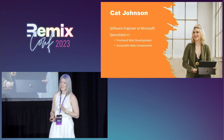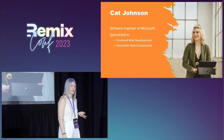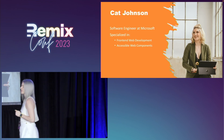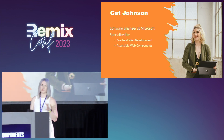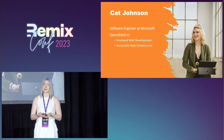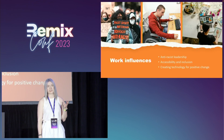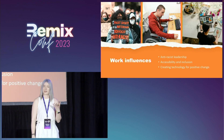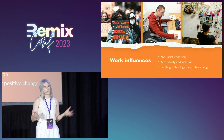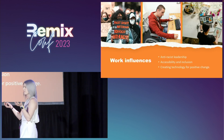My name is Kat Johnson. I'm a software engineer at Microsoft, and I specialize in front-end web development. I am specifically very passionate about creating accessible React components. With all of my work and my day-to-day, I love building websites and experiences that tie into areas I'm really passionate about — anti-racist leadership, creating accessible and inclusive experiences, and overall creating web experiences that create social impact and social change for the good of all mankind.